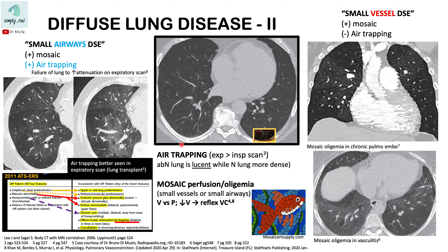Let's talk about air trapping and mosaic perfusion or oligemia. This is a normal scan. Each part of the lung is a summation of air density as well as blood flow within that area. Normally this is going to be even, meaning if you inhale, air is going to get in within the alveoli whether in this location or that location. The same way, if you have normal vascularity in your lungs, you're going to get equal perfusion more or less in each part.